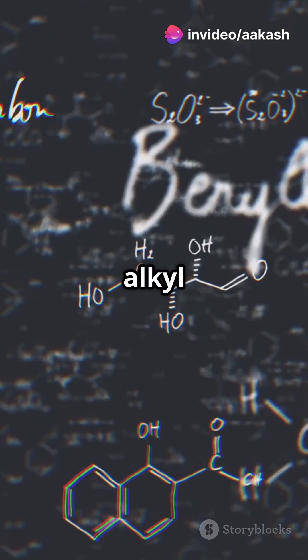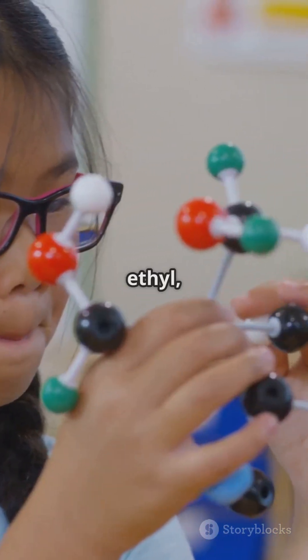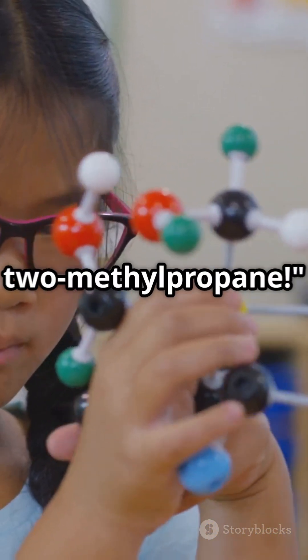Name the branches as alkyl groups. CH3 is methyl, C2H5 is ethyl, etc. Put it together, 2-methylpropane.